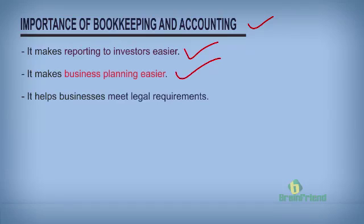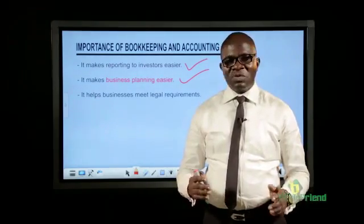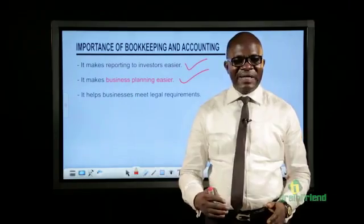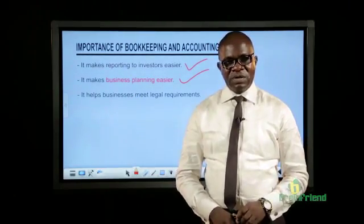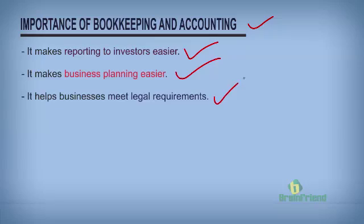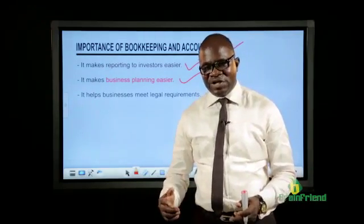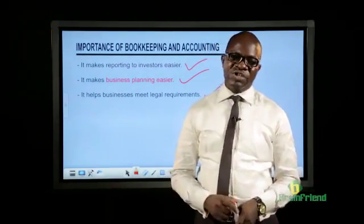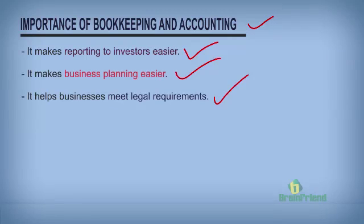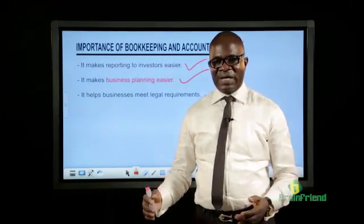It makes business plans easier. From the records of a bookkeeper and accountant, an organization can plan its future and immediate obligations. Bookkeeping and accounting reports are ready-made tools for business planning. It also helps businesses meet their legal requirements. From the reports of an accountant, a company can see its obligations, especially its tax obligations. By law, a company is required to submit its annual report, to file for taxation, and all of these things are made easier from bookkeeping and accounting records.